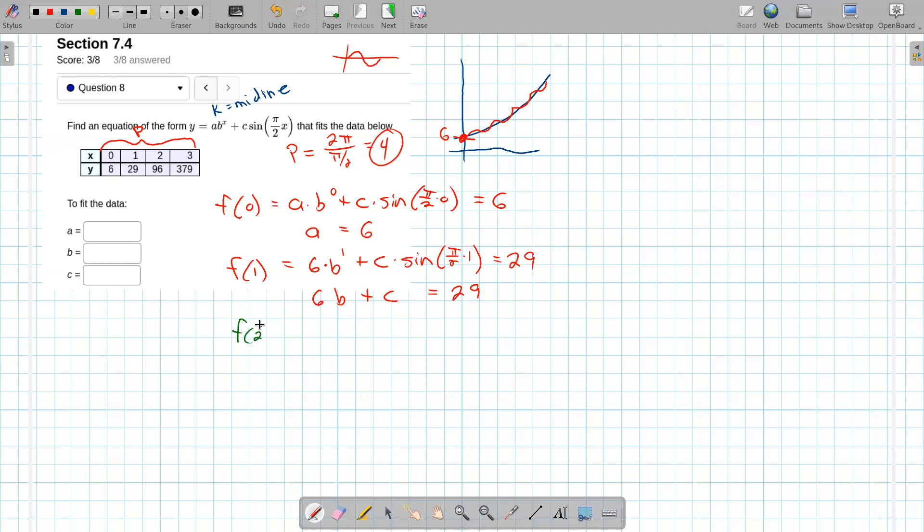How about f of 2? If we plug that in, we're going to get a is 6, b to the second, plus c, times the sine of π over 2 times 2. And that's supposed to equal 96. π over 2 times 2 is π. The sine of π is 0.